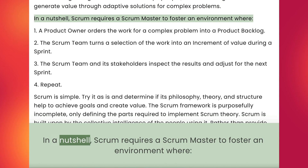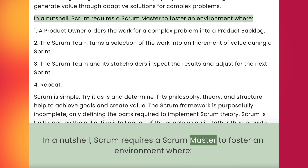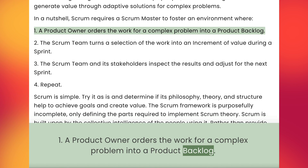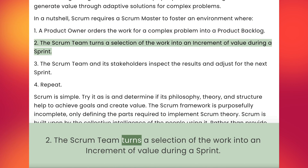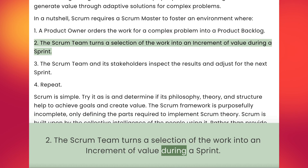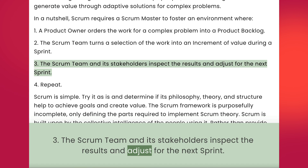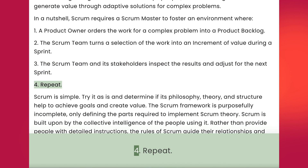In a nutshell, Scrum requires a Scrum Master to foster an environment where: one, a product owner orders the work for a complex problem into a product backlog; two, the Scrum team turns a selection of the work into an increment of value during a sprint; three, the Scrum team and its stakeholders inspect the results and adjust for the next sprint; four, repeat.